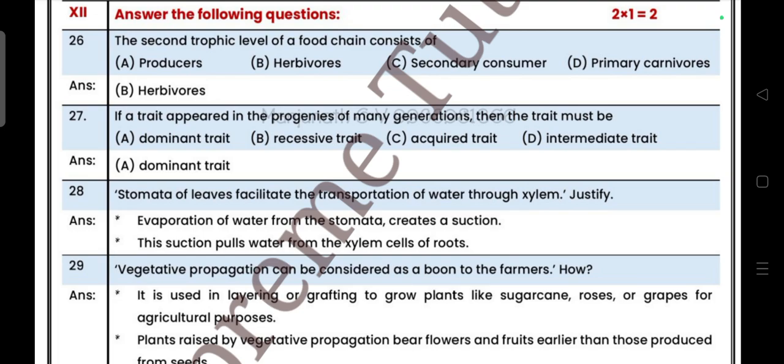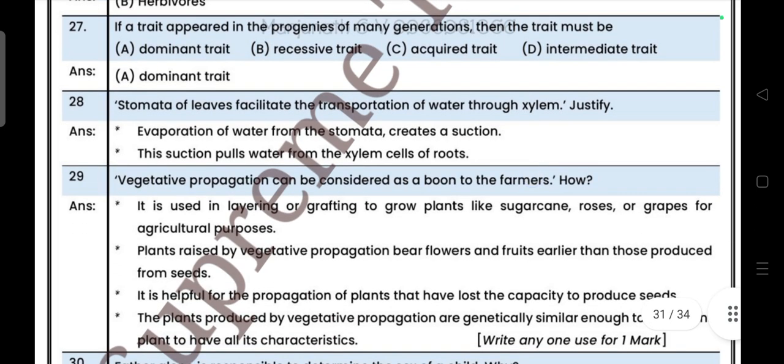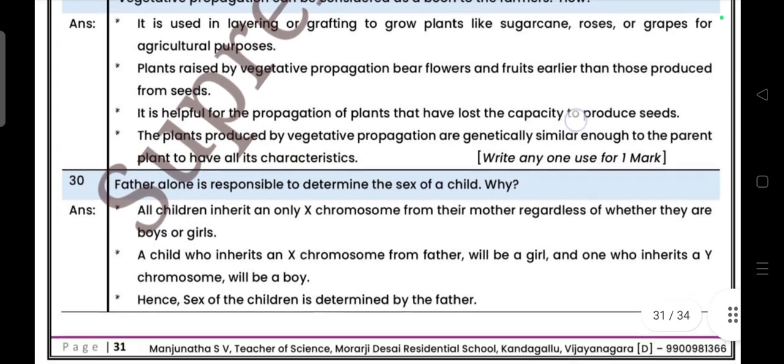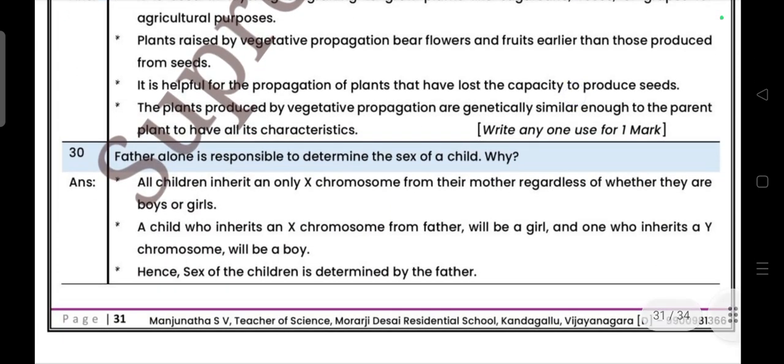Question 28: Stomata of leaves facilitate the transportation of water through xylem. Justify. Next: Vegetative propagation can be considered as a boon to the farmer. How? Father alone is responsible to determine the sex of the child. Why?